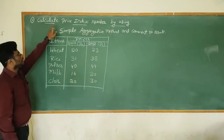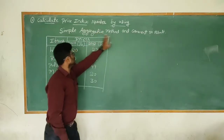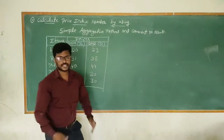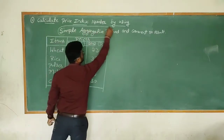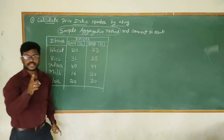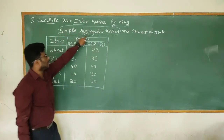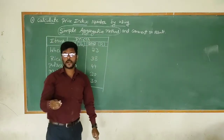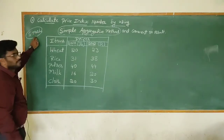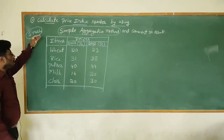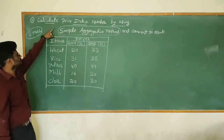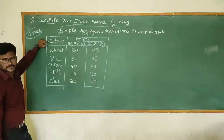Let us work through an example problem using the simple aggregative method. The problem asks us to calculate the price index number using the simple aggregative method and comment on the result. This method is also known as the unweighted aggregative method and is very important for your examination. Let us look at the given information.